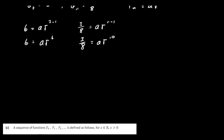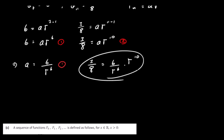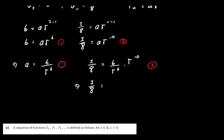We have two equations and two unknowns. Taking equation 1 and rearranging gives A equals 6 over r to the power of 6. Substituting this into equation 2: 3 over 8 equals (6 over r to the power of 6) times r to the power of 10. We have r to the power of 6 on the bottom and r to the power of 10 on top, so subtracting the powers gives 3 over 8 equals 6 times r to the power of 4.